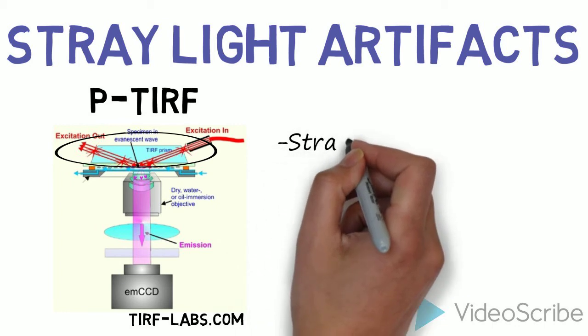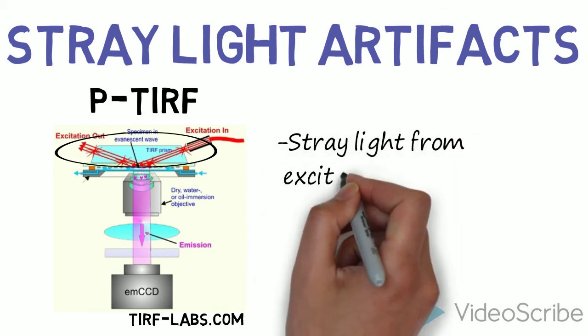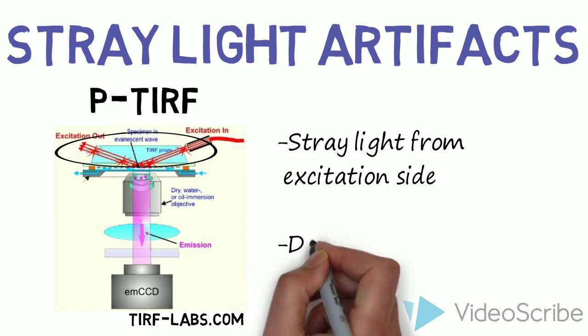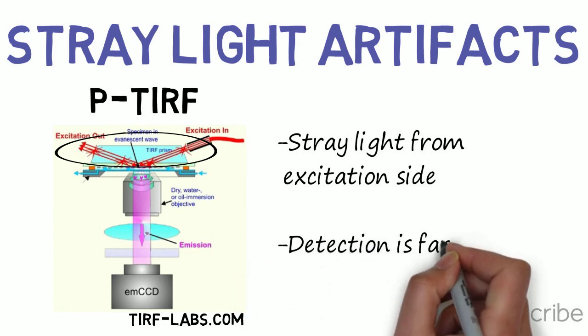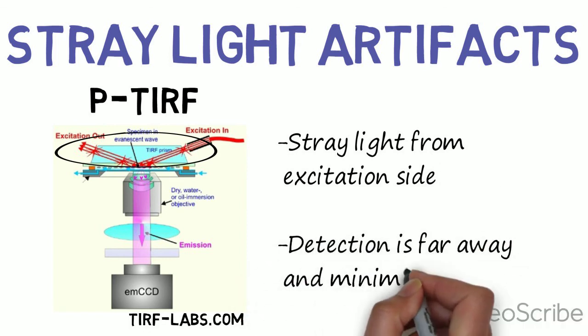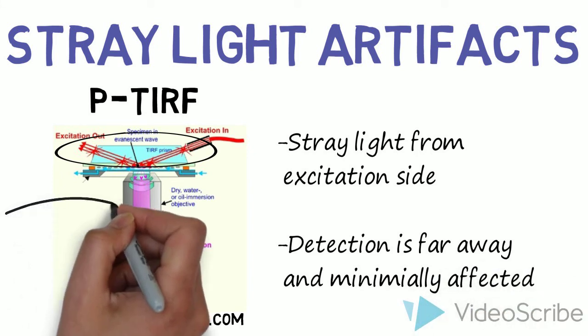In P-TIRF, stray light can come from scattering at the glass-water interface or at the prism. Because the collection objective is rather far away from these sources, rarely are extra measures necessary to minimize stray light.